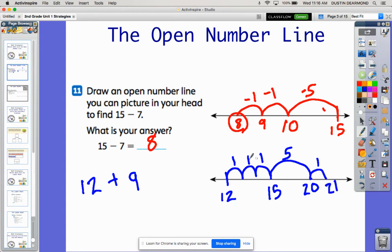So the answer to this problem would be 21. Again, everyone can do this differently. I could have started with 12 and jumped up five and then jumped a few more.